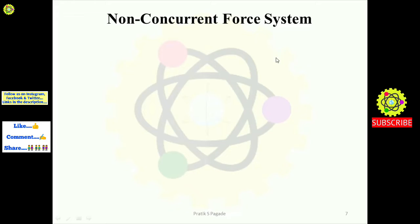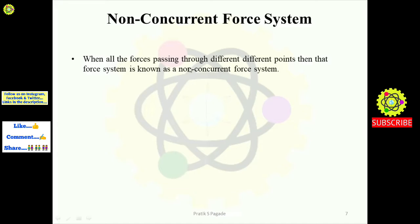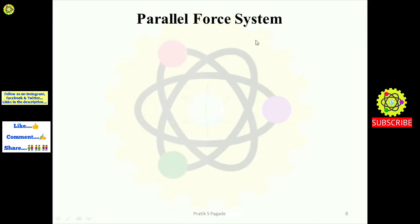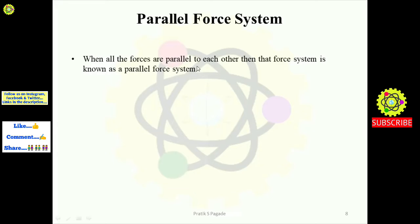Next is the non-concurrent force system. Definition: when all the forces pass through different points, that force system is known as a non-concurrent force system. In the example, force f1 acts from one point, f2 from another, f3 from another, f4, f5, and f6 each act from different points — so this is a non-concurrent force system.